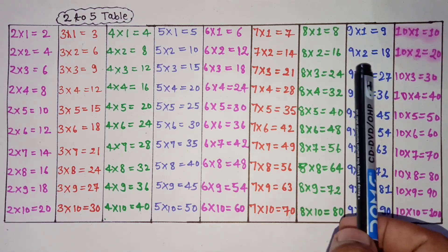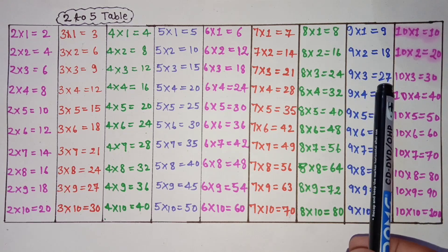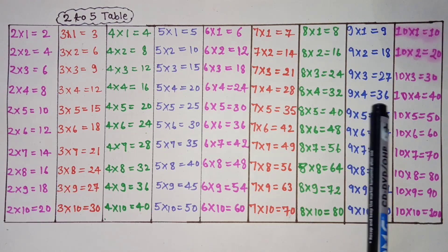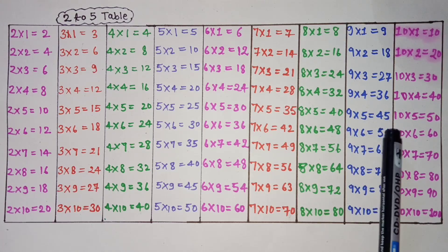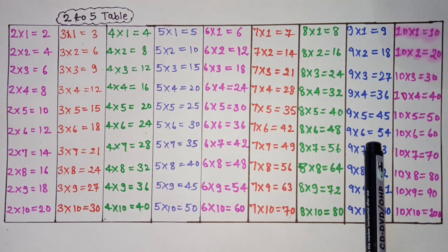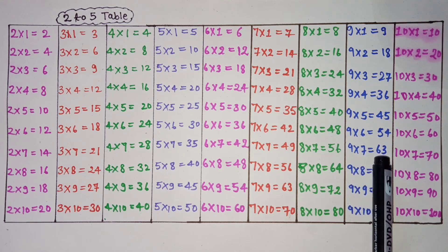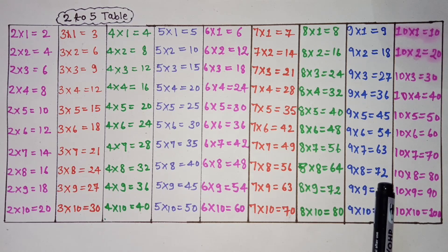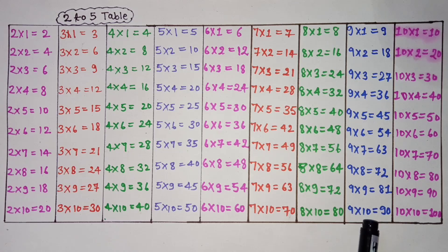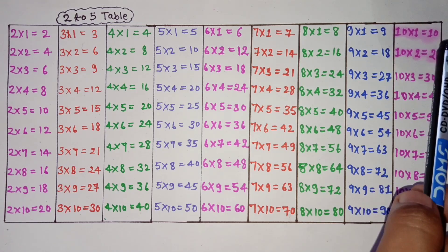9 ones are 9, 9 2's are 18, 9 3's are 27, 9 4's are 36, 9 5's are 45, 9 6's are 54, 9 7's are 63, 9 8's are 72, 9 9's are 81, 9 10's are 90.